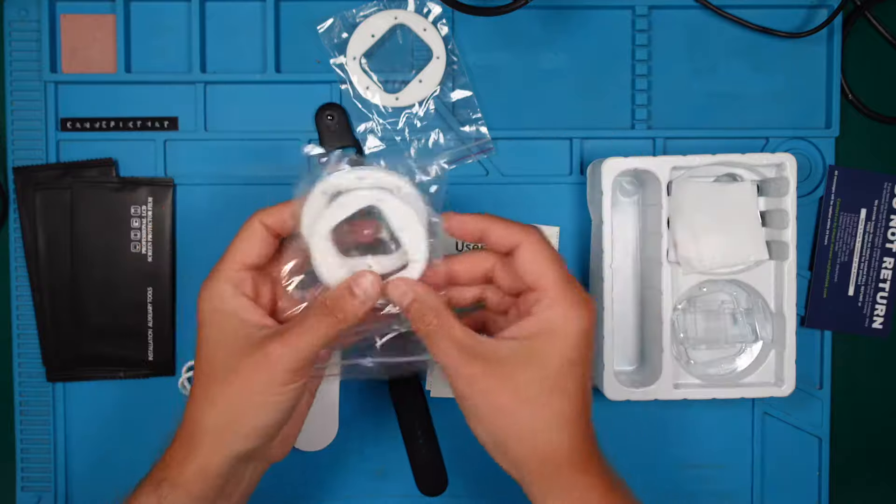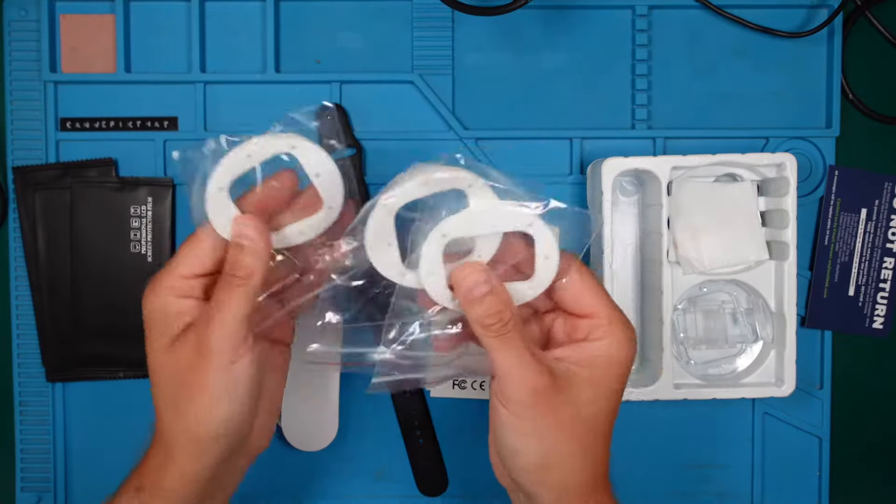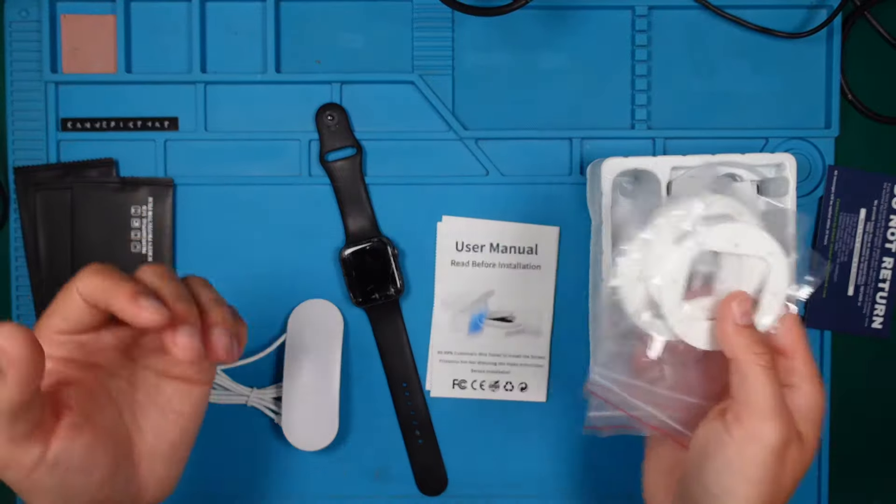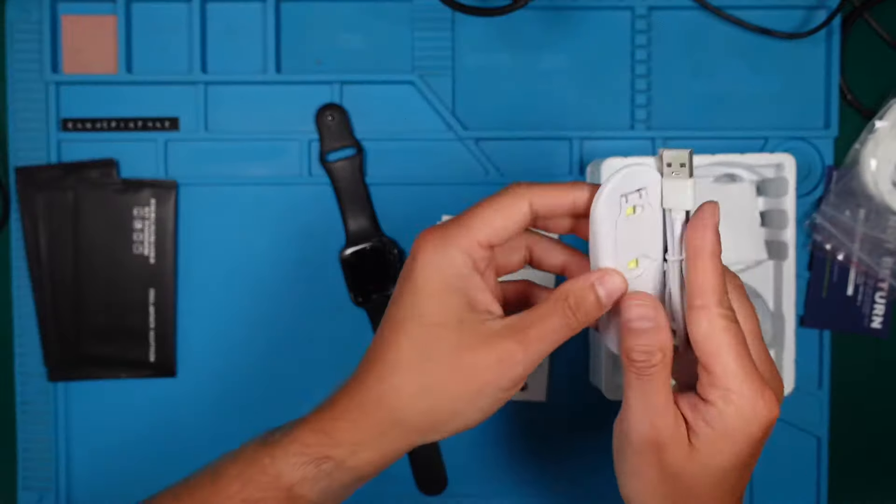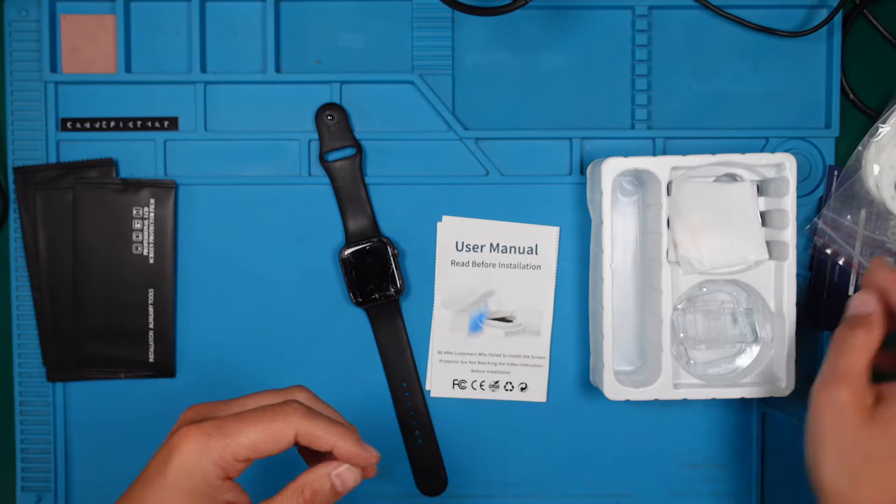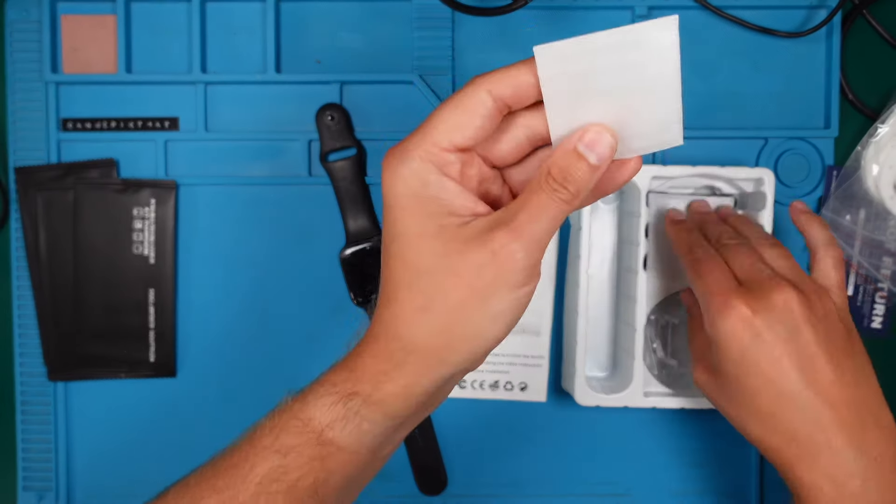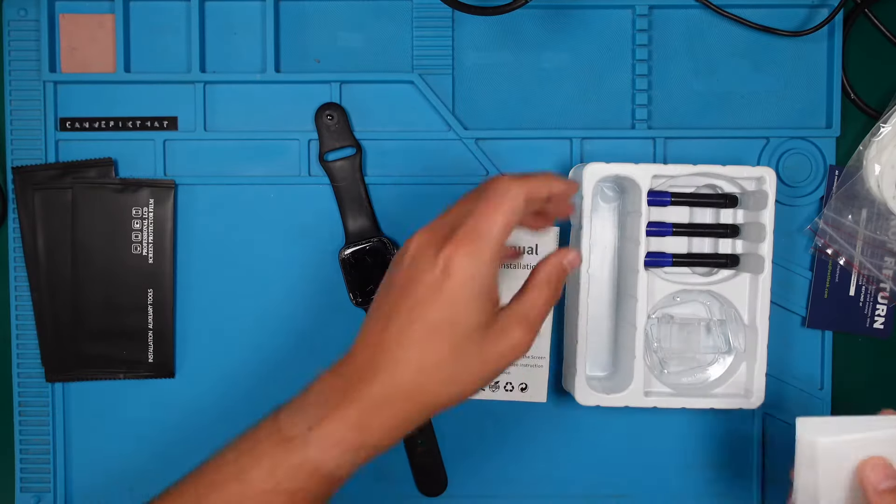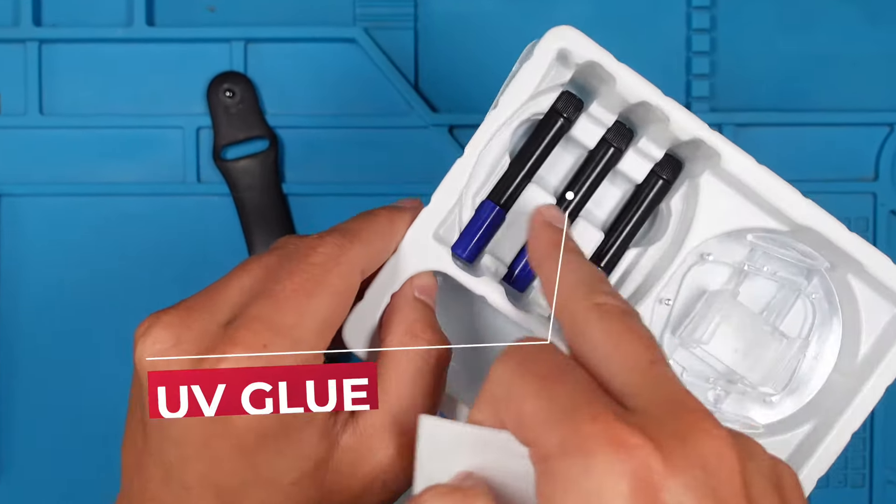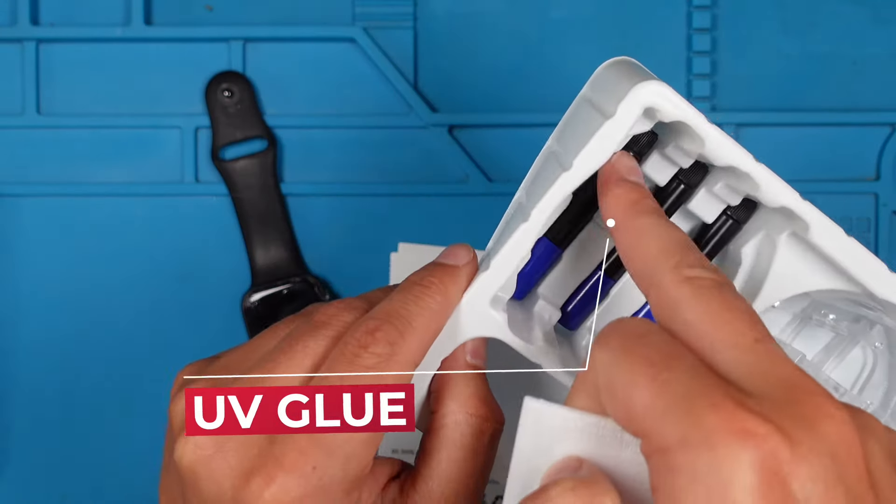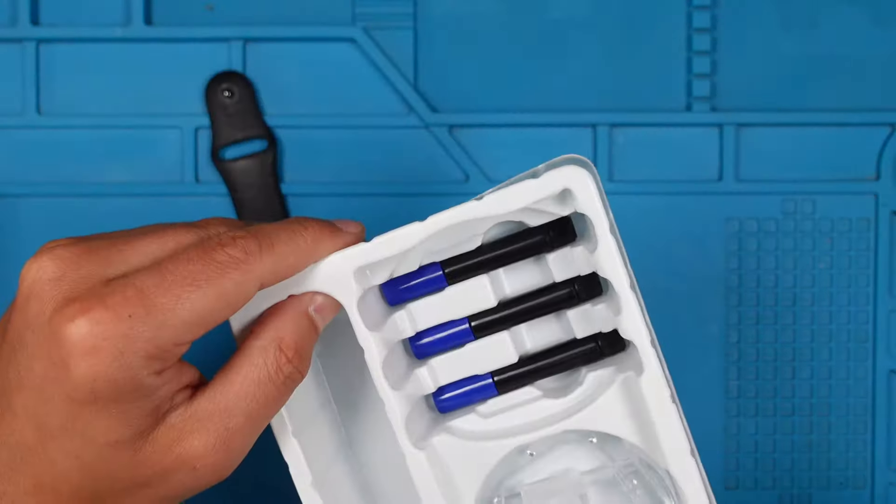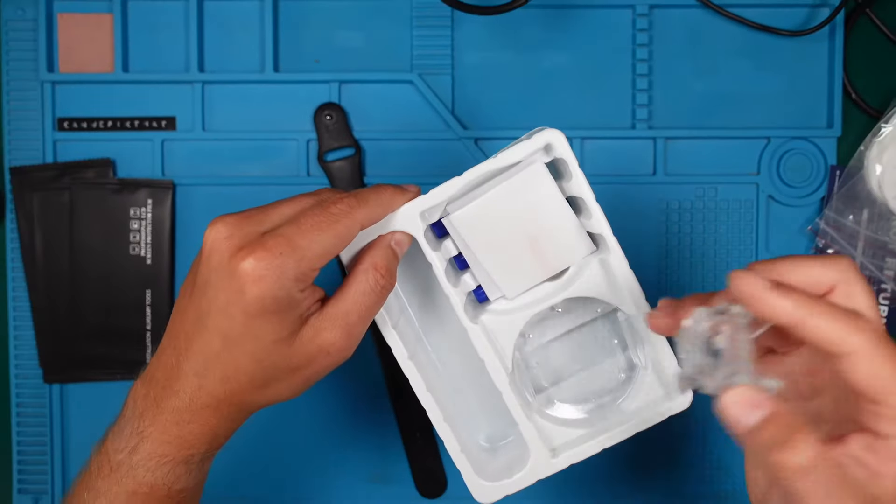In this package we get three of these glass protectors. So if we shatter one or it will not work, we have two more as spares. This here is the glass itself. We will need it in a bit. And here we see the glue. That's UV glue and we will try to apply it and see if it will work.